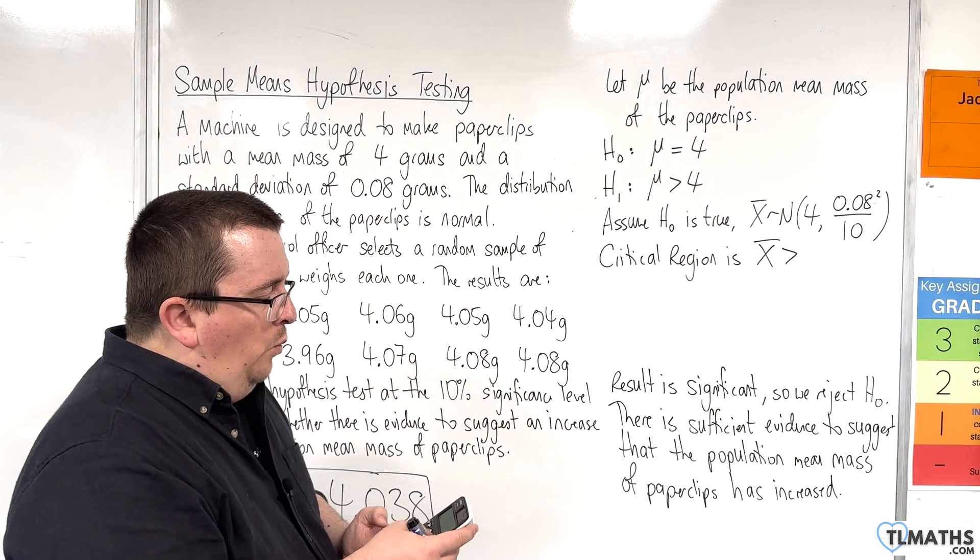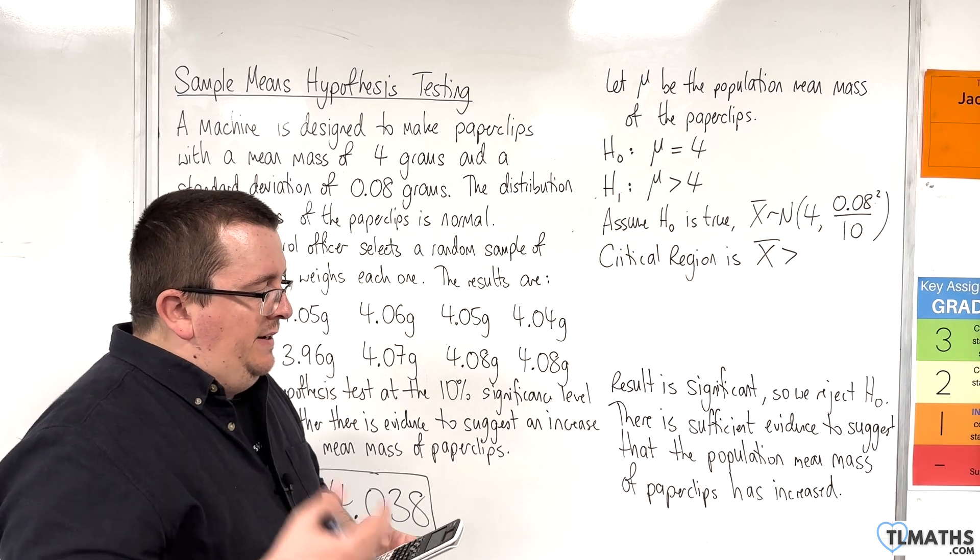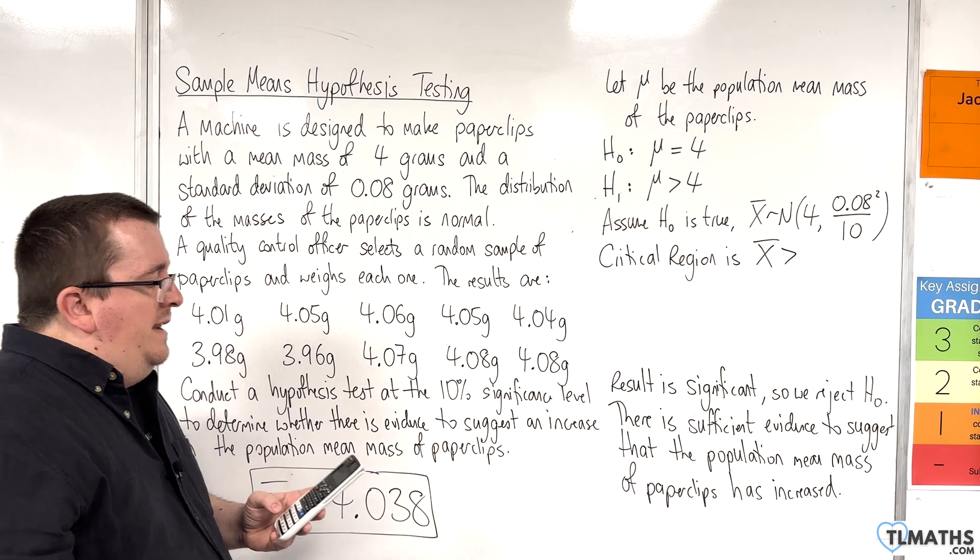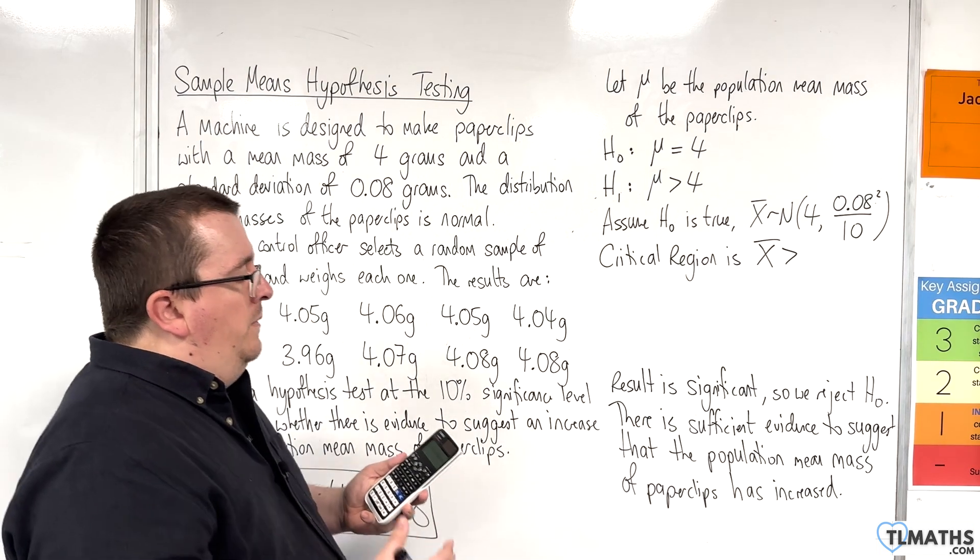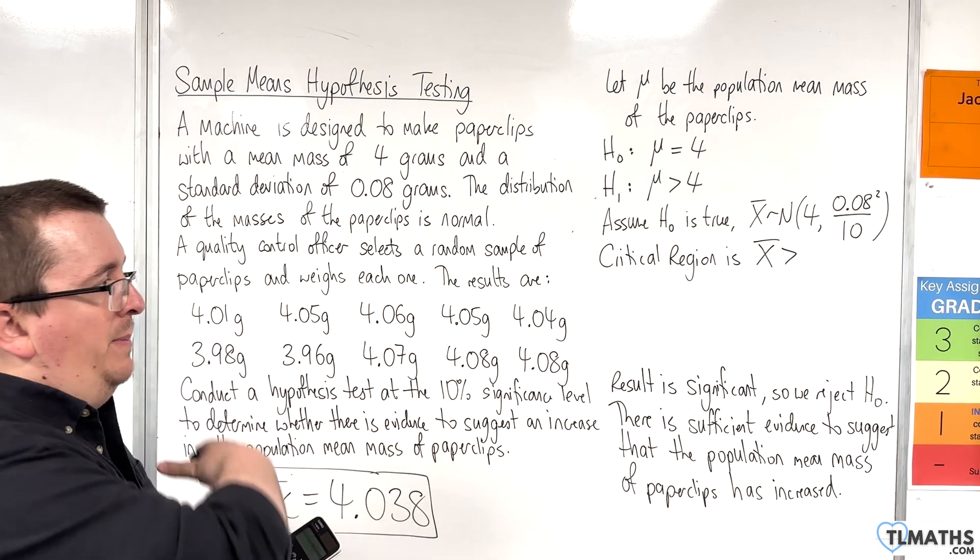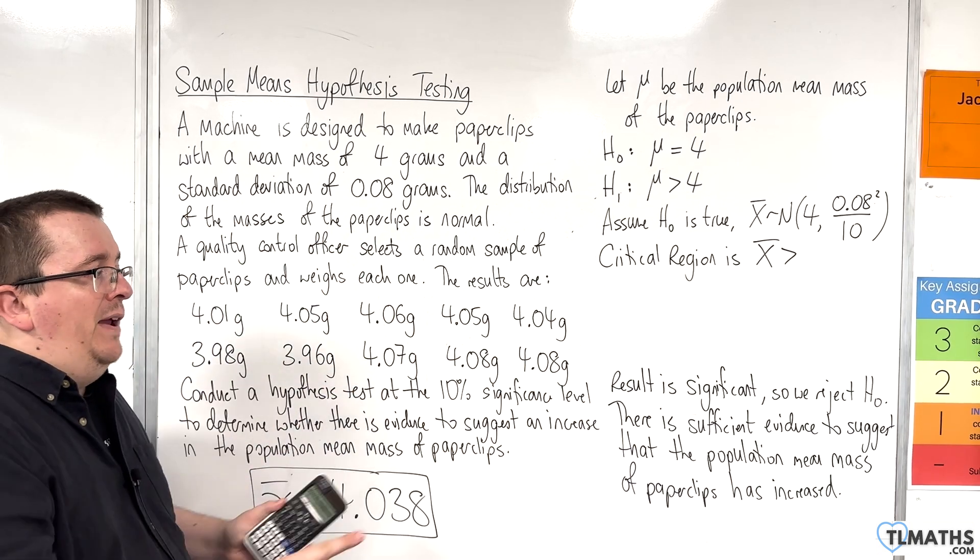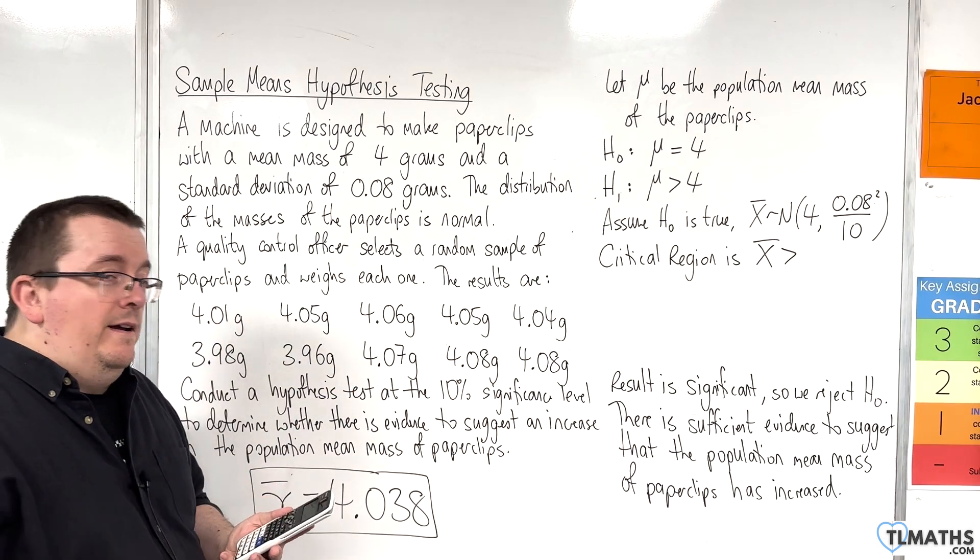Well, what I need to do is I need to go to menu, I need to go to distribution, I need to go to inverse normal. Now, for the calculator that I've got, the error is always to the left. Now, because we are looking to the right, we want 10% at the top, I need to type in 0.9.